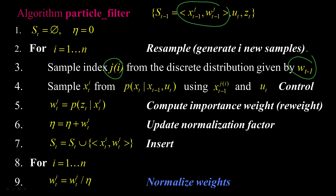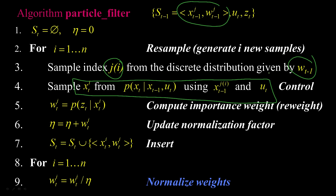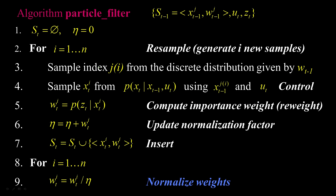The next thing we do — this is actually a combined step — we sample a new state using two things: whatever the old state was, that's the value we pulled from the particle, that's this xt here. We've sampled a particle and it has a particular state that goes right in there. We also have the action.